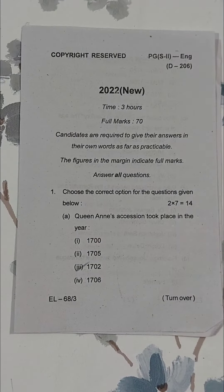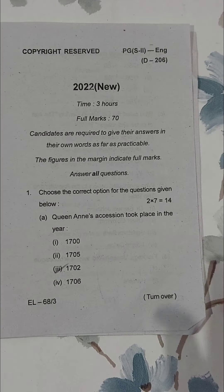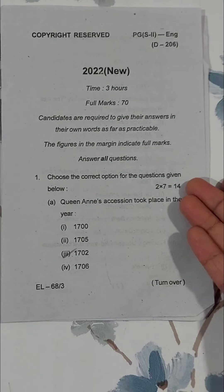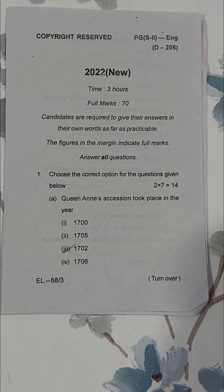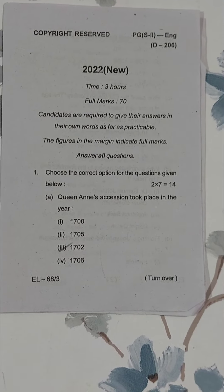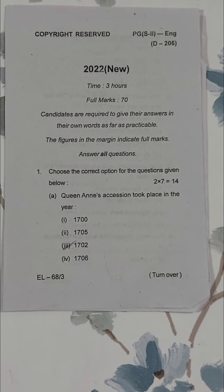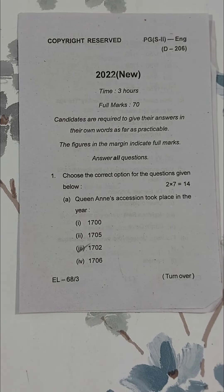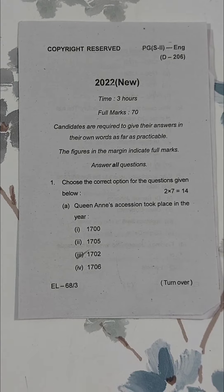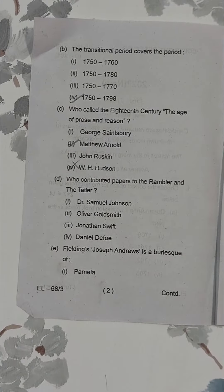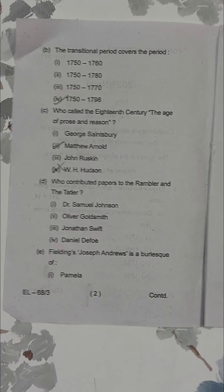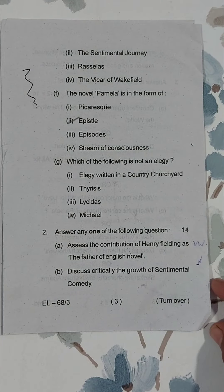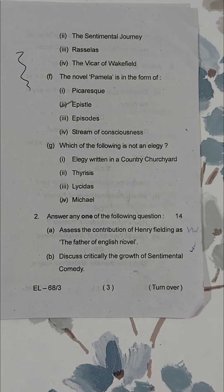Now let's move on to paper number six. This paper is of English Literature from 1660 to 1798. If you notice, the MCQ pattern has completely changed here. Here you have to answer seven MCQs which are two marks each, so the MCQ section is different from paper five.